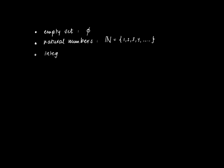The set of integers is denoted by capital Z. Z equals all natural numbers including all natural numbers with a minus sign. So minus 4, minus 3, minus 2, minus 1, 0, 1, 2, 3, etc.